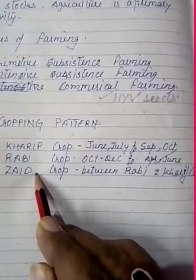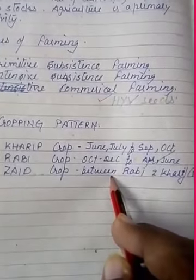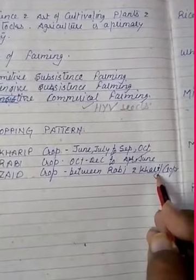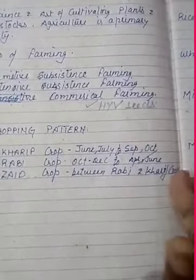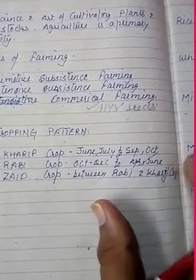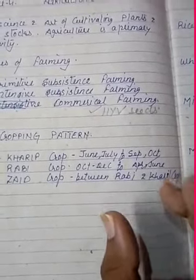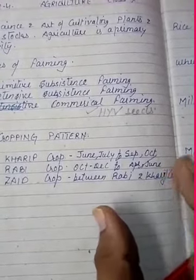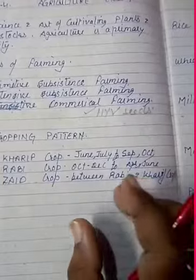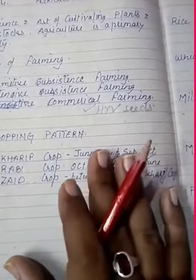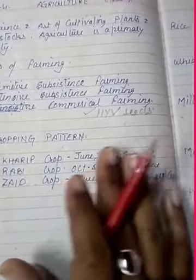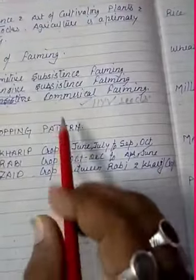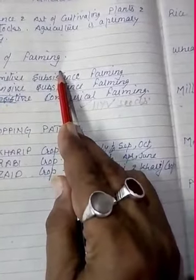The last cropping pattern is the Zaid crop. Zaid crop is a crop which comes in between Rabi and Kharif crops. There is a short season during Zaid season. Some crops produced during this period include watermelon, cucumber, vegetables, and fodder crops. Sugarcane takes almost a year to grow.